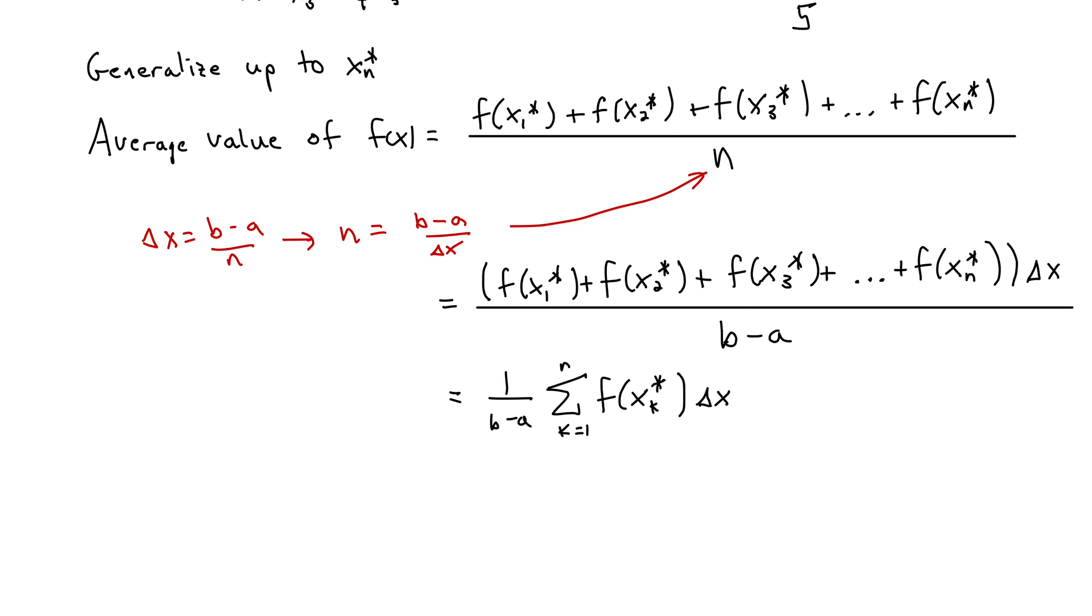Well, this would give us a reasonable approximation for n values of xk star, but we want to know the exact value of the average of f(x). So to find the exact value for the average, we'll let n go to infinity and take an infinite number of points from the function. We do that using a limit, and this will give us the exact value of the function.